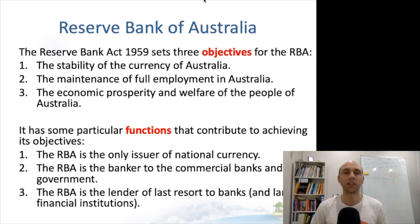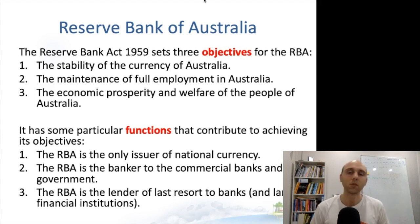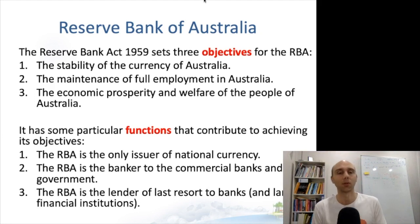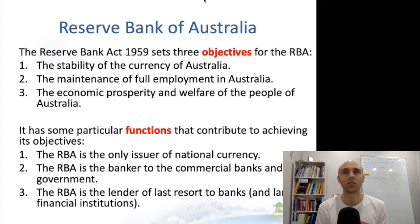The RBA has particular functions that help it achieve these objectives. First, it is the only issuer of national currency — there is some debate about this, but we can simplify it that way. Second, it is the banker of banks — it acts as banker to the commercial banks and also to the government. Third, it is the lender of last resort to the banks, which ties in to that second function.